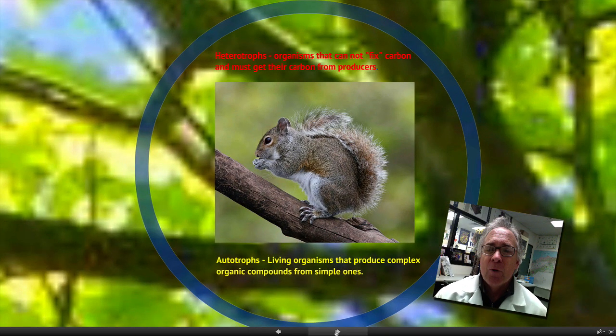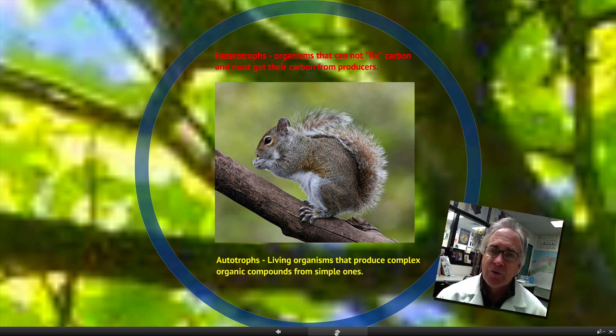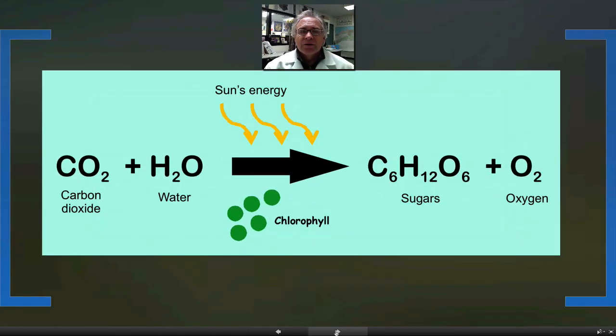The two living organisms on the planet affected by photosynthesis are heterotrophs and autotrophs. Autotrophs are plants and some bacteria - living organisms that produce very complex organic compounds from simple ones. Only plants and a few bacteria can do that. Heterotrophs are organisms that can't fix carbon and must get their carbon from producers or plants.